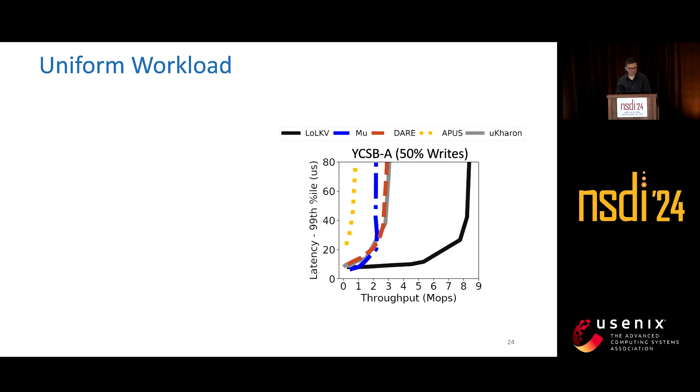Let's take a look at our results for the uniform workload. For the uniform workload, we use YCSB workload A, which consists of 50% writes. On the Y-axis, we plot the tail latency or the 99th percentile latency, and on the X-axis, we have throughput.